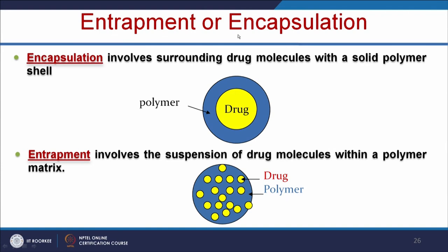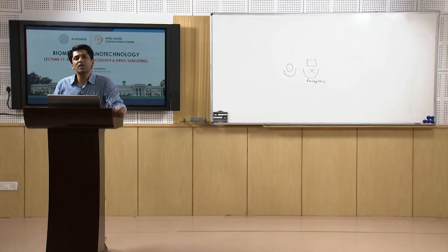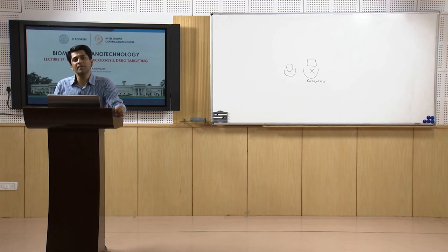Encapsulation of a drug involves surrounding the drug molecules with a solid polymer shell, whereas entrapment involves the suspension of drug molecules within a polymer matrix. When the polymer absorbs water, it swells in size, creating voids throughout the interior polymer, and smaller molecules can escape through these voids at a known rate controlled by molecular diffusion. We can control the release of the drug by a simple cross-linking reaction — if more drug release is needed at the initial stage or slow release is preferred, both can be achieved by adjusting the cross-linking.